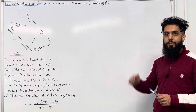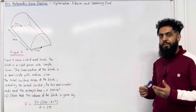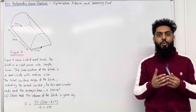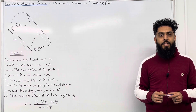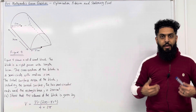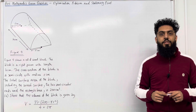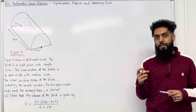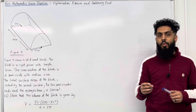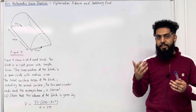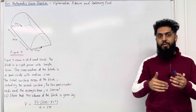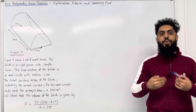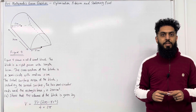Please pause the video, have a go at part A. Once you've got your complete solution, then play the video. In almost all optimisation problems, part A of the question will be a 'show that' question. My top tip is to generate two formulas. The second formula will most likely require you to make one of the variables the subject, and then substitute that variable into the first formula in order to arrive at the formula you're trying to derive.